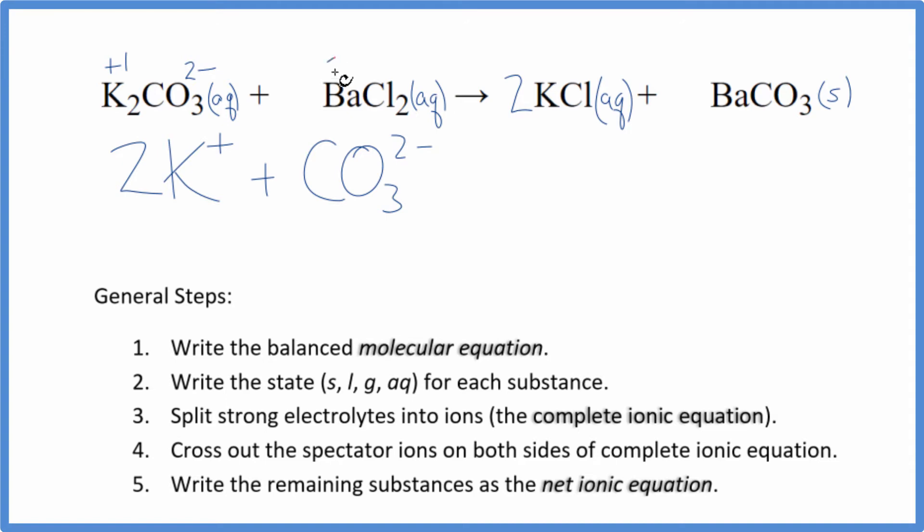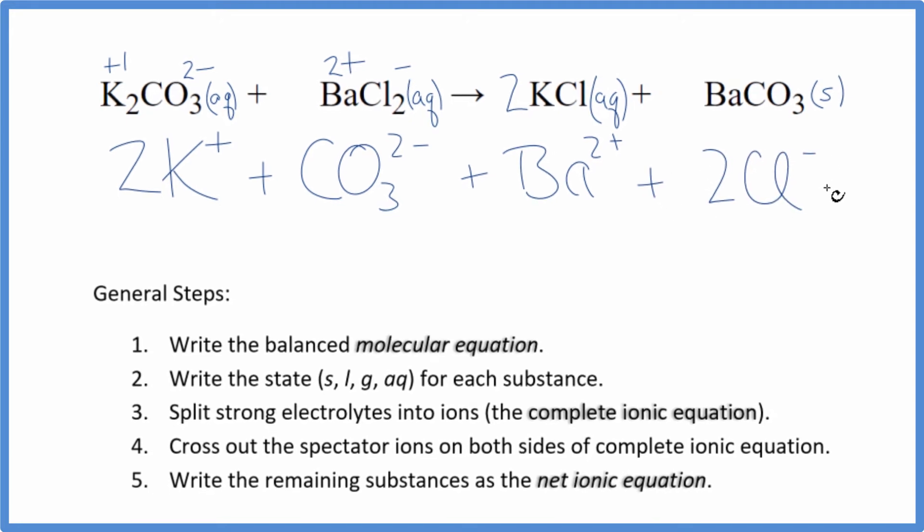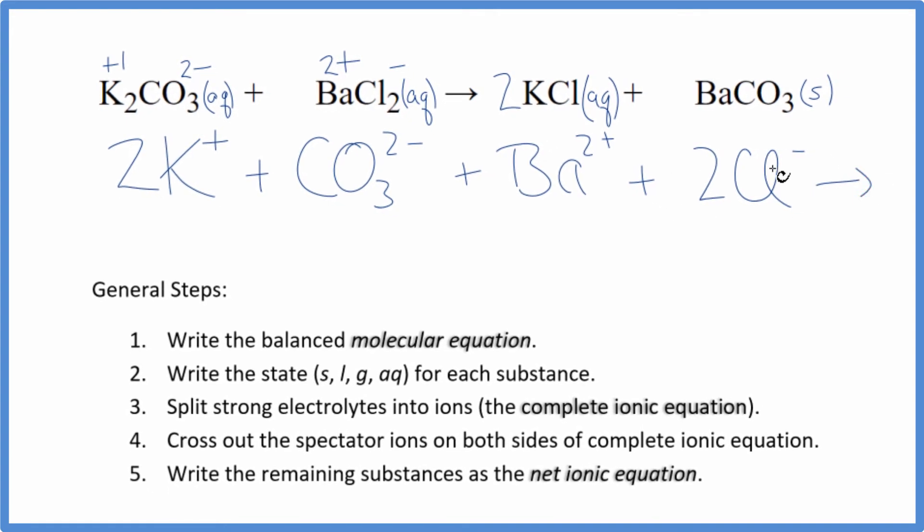Barium's in group two on the periodic table. That'll be two plus. Chloride, one minus. So we have the barium ion. And then for the chloride, we have two of them. So we have two chloride ions. And those are the reactants in our net ionic equation.